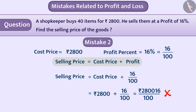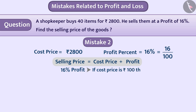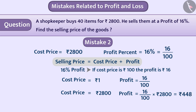Remember, the selling price is obtained by adding the actual profit to the cost price, so we must convert the profit given in percentage into actual profit. A profit of 16% means if the cost price is ₹100, the profit is ₹16. So when the cost price is ₹1, the profit is 16/100. Therefore, when the cost price is ₹2800, profit = (16/100) × 2800 = ₹448. Hence, selling price = ₹2800 + ₹448 = ₹3248.